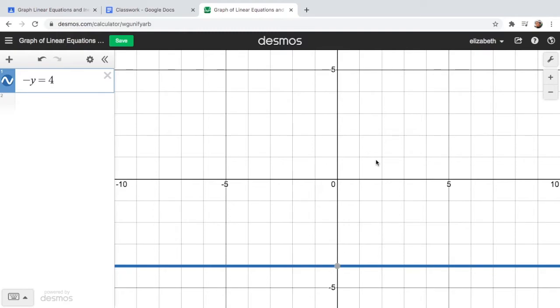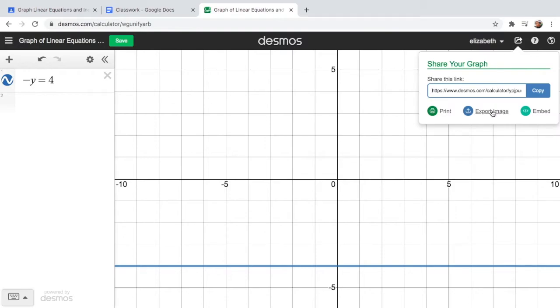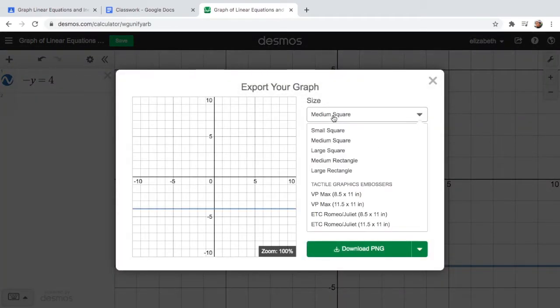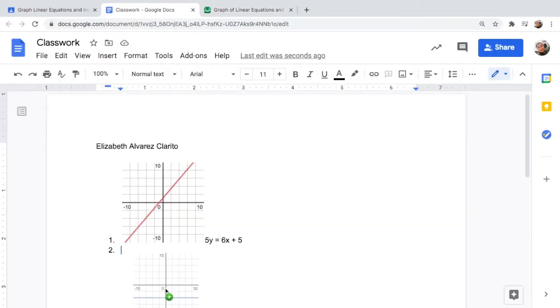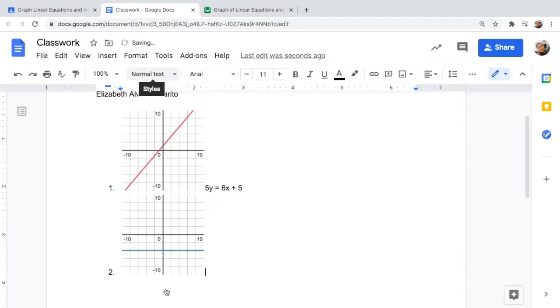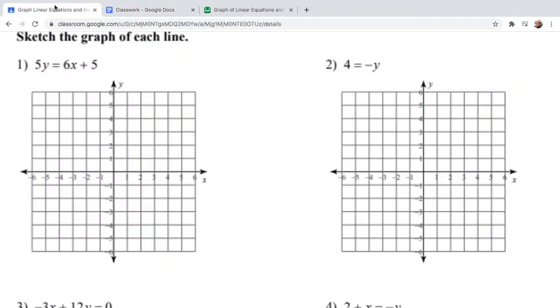Then click the arrow, export image, make it small, whatever you want, then drag and drop. And here's your graph. So this is the graph of -y = 4. So let us try another problem.